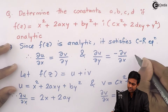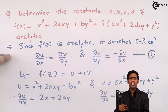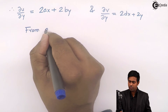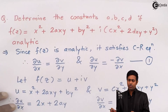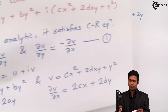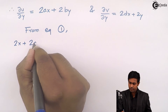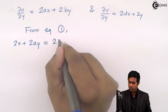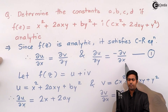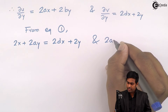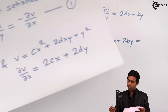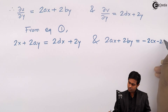Now let us substitute these four terms into the Cauchy-Riemann equations. From the first CR equation, ∂u/∂x = ∂v/∂y gives us 2x + 2ay = 2dx + 2y. From the second CR equation, ∂u/∂y = −∂v/∂x gives us 2ax + 2by = −2cx − 2dy.